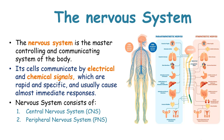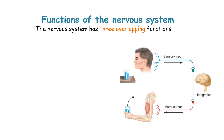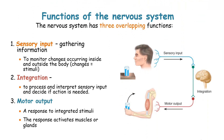The nervous system has two divisions: the central nervous system known as the CNS and the peripheral nervous system known as the PNS. The nervous system also has three main overlapping functions — sensory input, integration, and motor output.